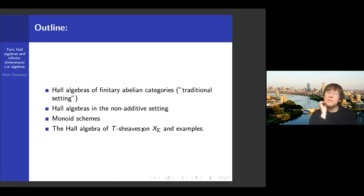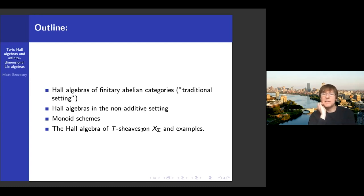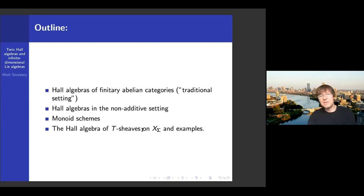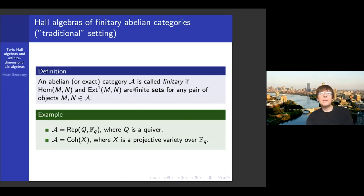My plan is to first talk a little bit about Hall algebras in the traditional setting — they are a tool important in representation theory, for people who study quiver representations, quantum groups, and related things. But the setting in which we will ultimately apply them is actually somewhat different: categories that are combinatorially defined and non-additive, but where one can nevertheless do the same thing. Then I'll discuss some elements of the algebra-geometry of monoid schemes and the combinatorics we see in that setting.